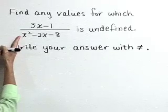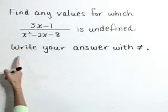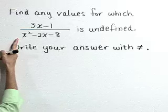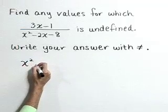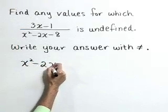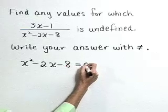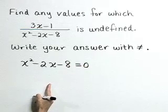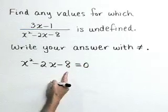This rational expression will be undefined for x values that cause the denominator to equal 0. So let's find those by setting the denominator x squared minus 2x minus 8 equal to 0 and then solving for x. This is a quadratic equation.